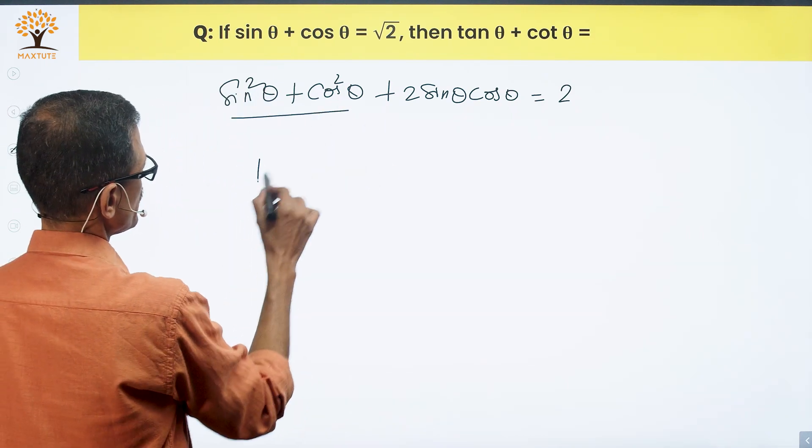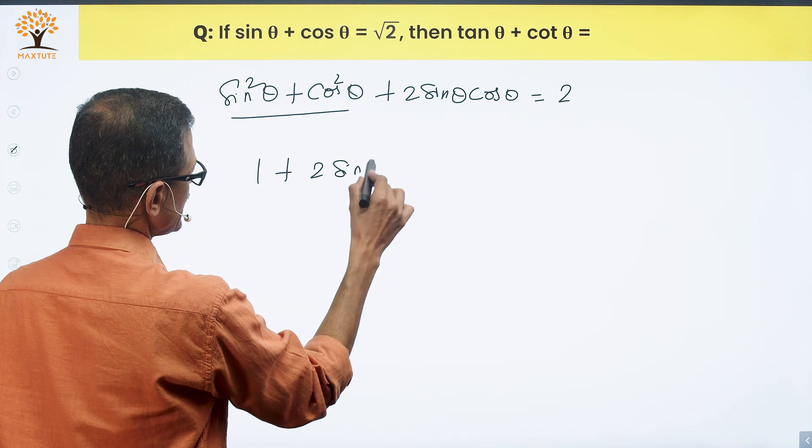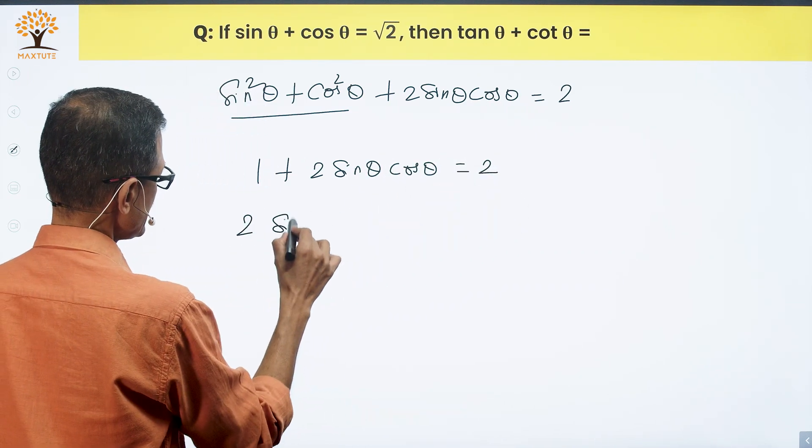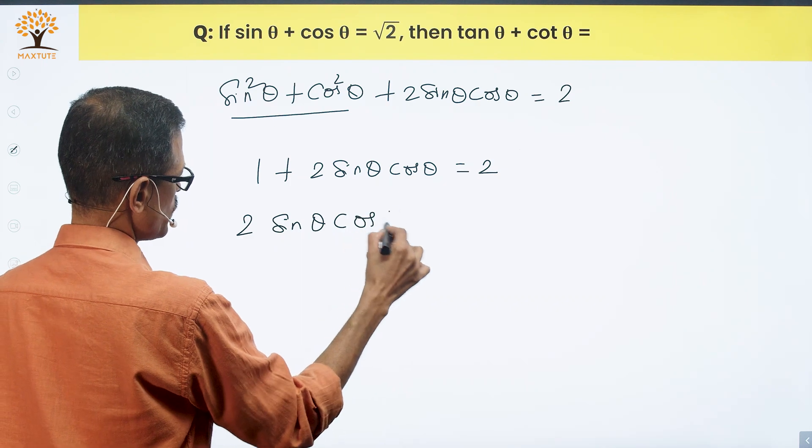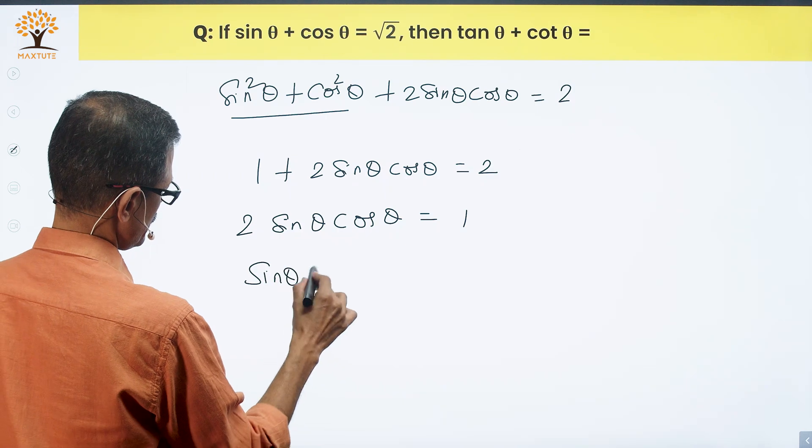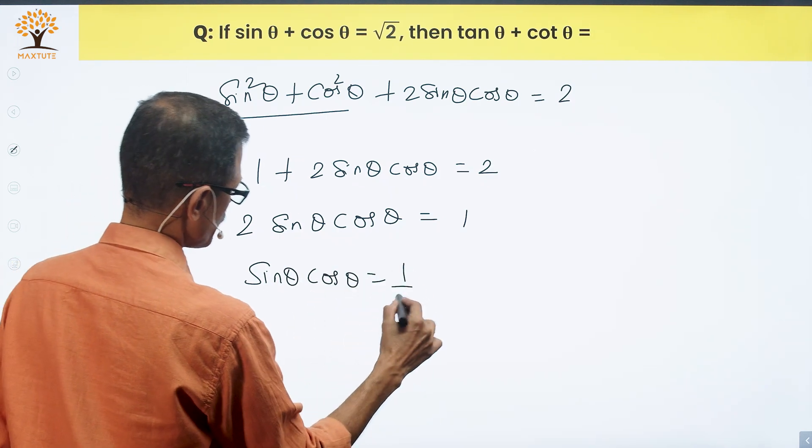Sin square theta plus cos square theta is 1. So 1 plus 2 sin theta cos theta is equal to 2. Or 2 sin theta cos theta is equal to 1. Taking this 1 to the right hand side. So sin theta cos theta is equal to 1 by 2.